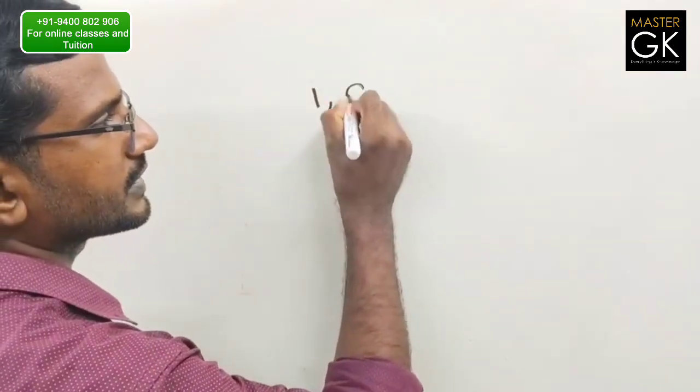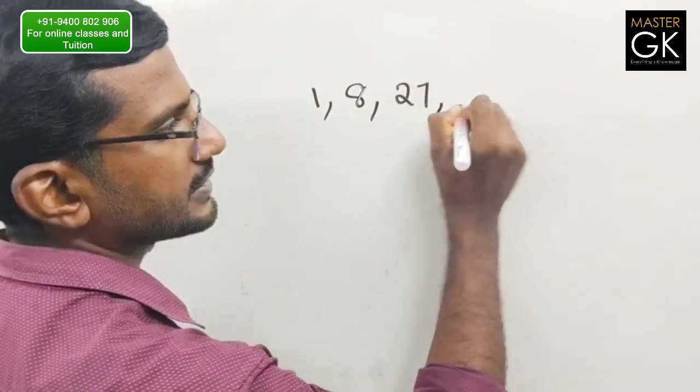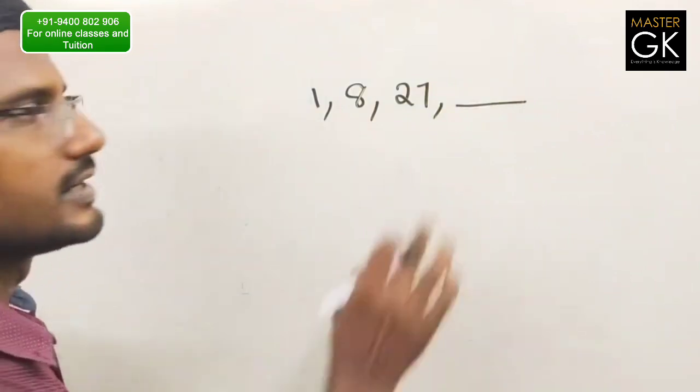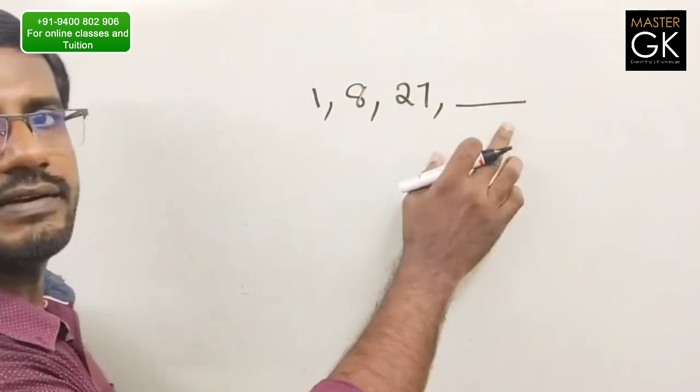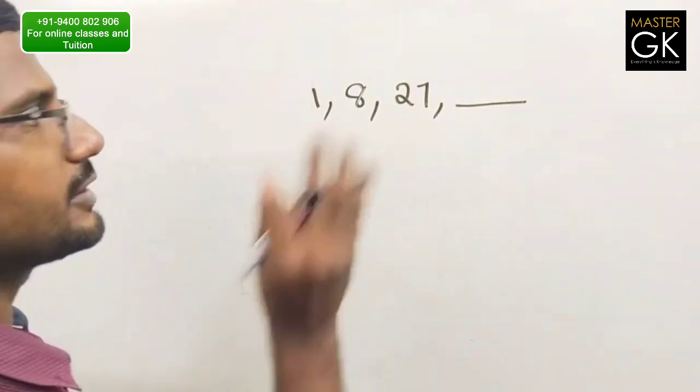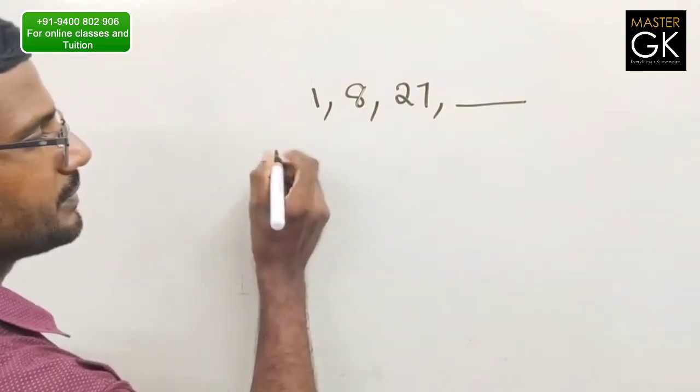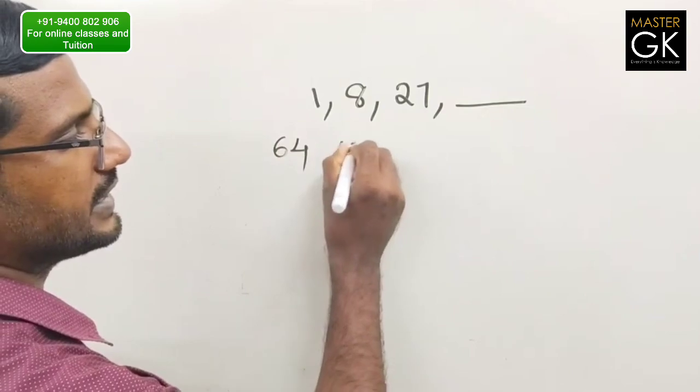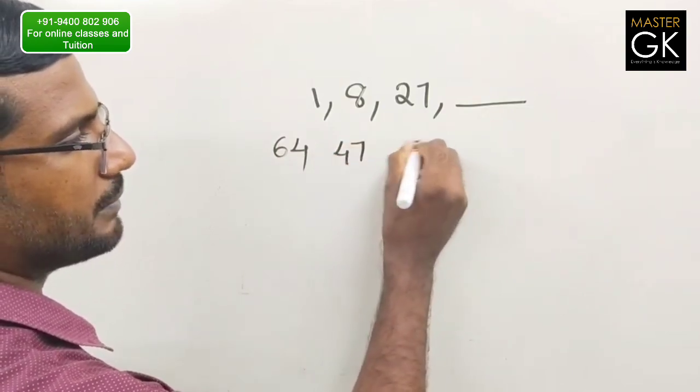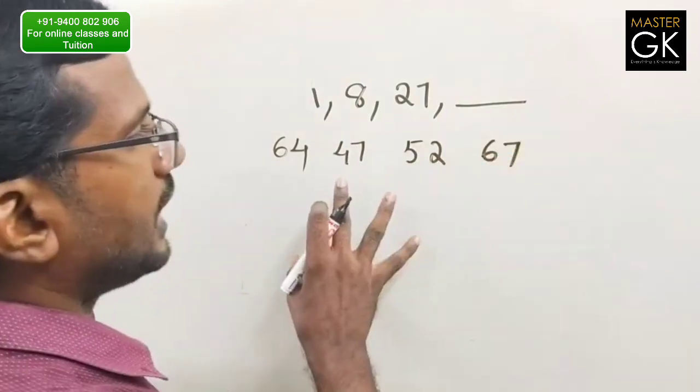1, 8, 27, dash. If you have a pattern of four, you can use it. You can do options: 64, 47, 52, 67. How do you do this?